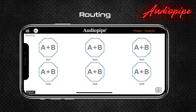Routing: the routing function is responsible for choosing one of three possible signals to feed each of the four output channels. The three signals to choose are: A — channel A right at the output of the input parametric EQ; B — channel B left at the output of the input parametric EQ; and A plus B, which sums both previous signals for mono application to your subwoofers.